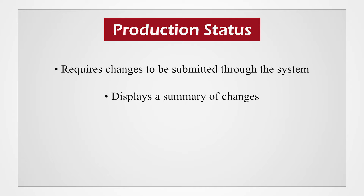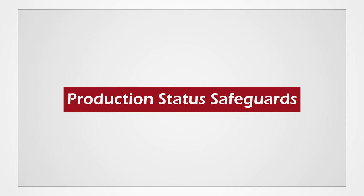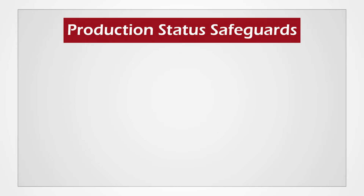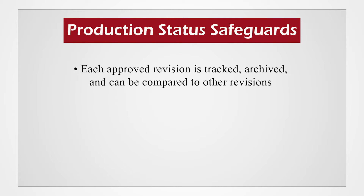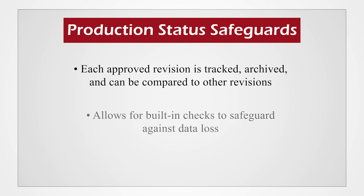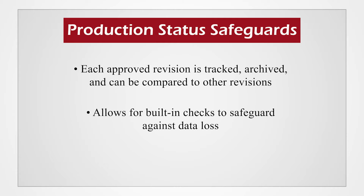The preview acts as a safeguard so users can review the changes before altering any data or removing it from the project. Production status also includes other safeguards, such as how each approved revision is tracked, archived, and can be compared to other revisions. Submitting changes through the system while in production status allows for built-in checks to safeguard against data loss, as altering fields mid-data collection may change the data validity.